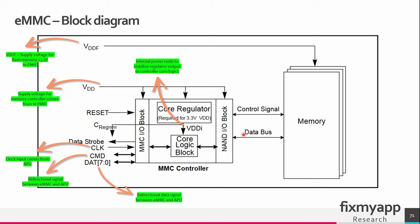In this block diagram you can see the eMMC flash memory: this is the MMC controller, also the memory controller, and this is the memory flash storage. The MMC controller can write or read the data stored on the flash storage. If it wants to read, it will send a read action on the control signal, and the memory will serve this data back on the data bus to the controller, and the controller will send this data on the data lines back to the APU.